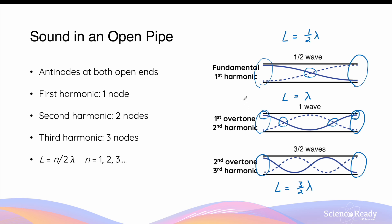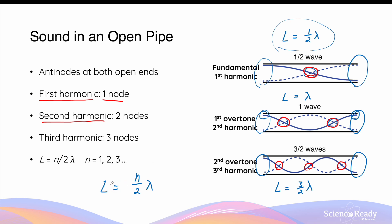There is a clear pattern for an open pipe system: the number of nodes always corresponds to the harmonic number — one node in the first harmonic, two in the second, three in the third, and so on. The length of the pipe is given by L = (n/2)λ, where n is the harmonic number. For the first harmonic, L = λ/2; for the second, L = λ; and for the third, L = 3λ/2. This formula helps determine the pipe length or wavelength for any harmonic in an open pipe.